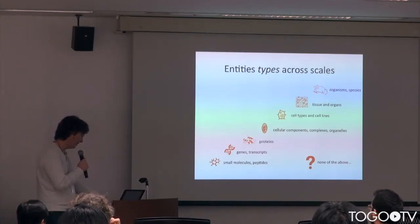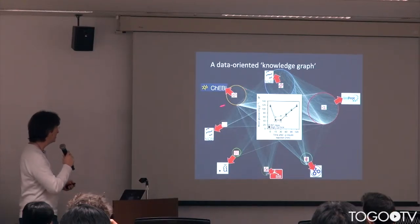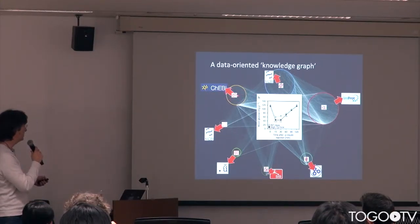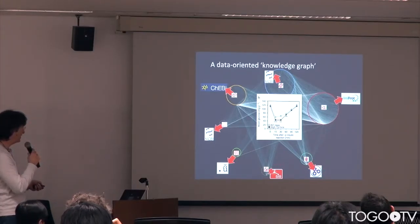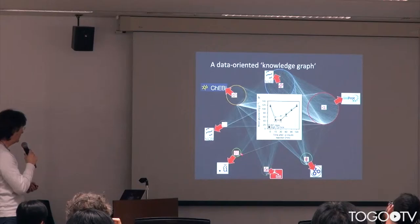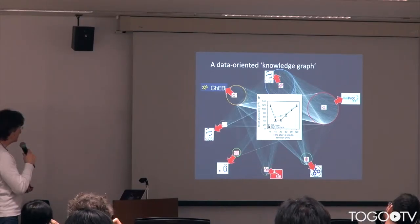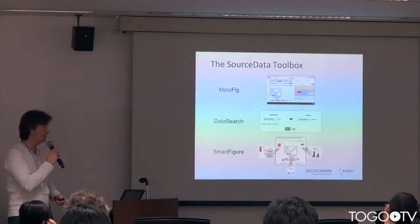We try to link to a single major resource per entity type: small molecules is ChEBI, sometimes PubChem; genes is NCBI Gene; proteins, UniProt; protein complexes and cellular components in Gene Ontology; cell types and cell lines is Cell Ontology (CLO), a resource from the SIB; tissues and organs, we use Uberon; and taxons, we use NCBI Taxon. So these entities are normalized and linked to these resources.